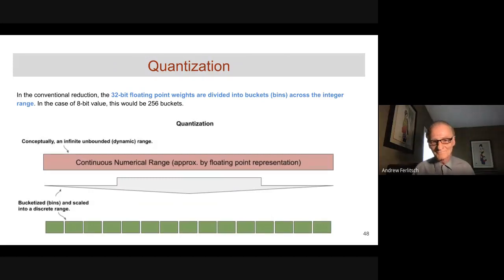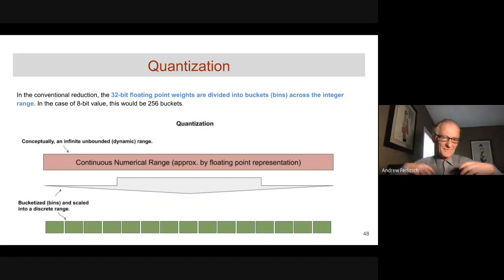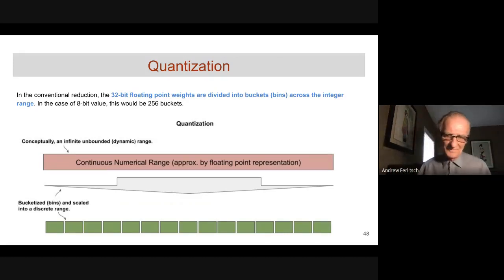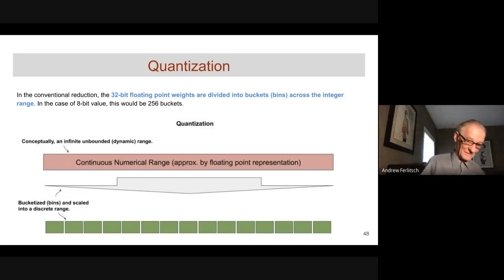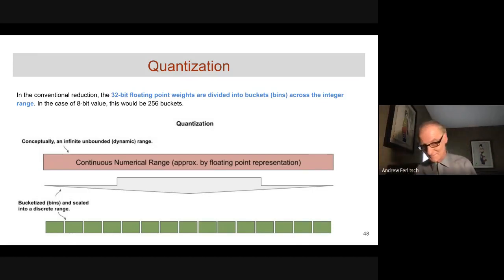Quantization works best when the ReLU activation range is constrained to a maximum value of 6 (ReLU6), as it maintains better accuracy when weights are quantized to integers. To quantize, the dynamic range of float32 values is split into 256 buckets for 8-bit integers, applied as a normal distribution — values near the center get narrower bands and outliers get wider bands. The software handles this automatically.